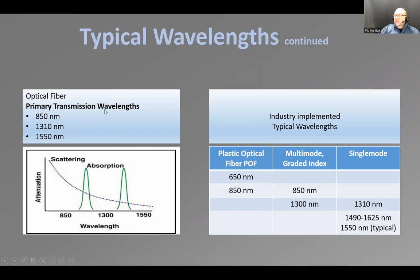To summarize the primary optical fiber transmission wavelengths: 850, 1310, and 1550 nanometers. There are also plastic optical fibers — some are made of plastic. Multimode graded-index fibers typically use 850 and 1300 nm. Single-mode fibers most commonly use 1310 and 1550 nm, with 1550 being the most common. That's the last slide.